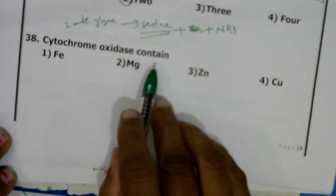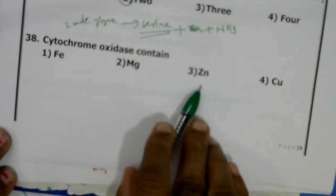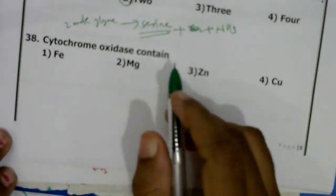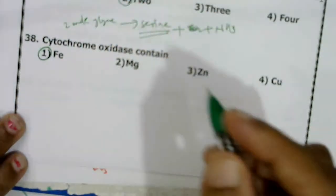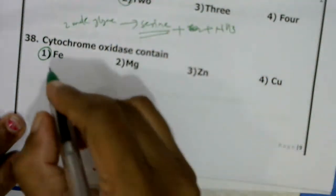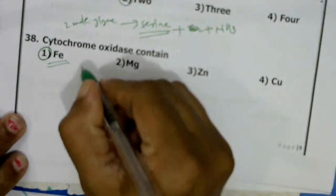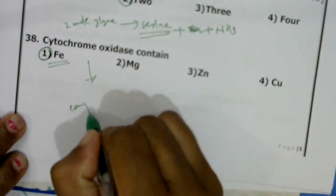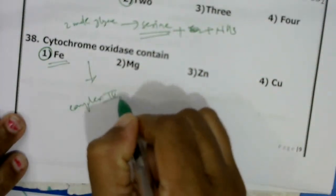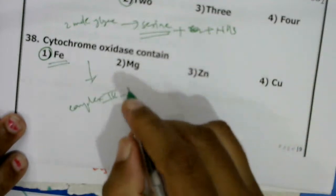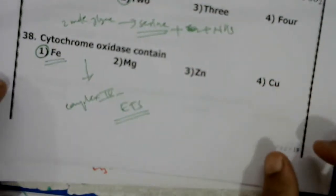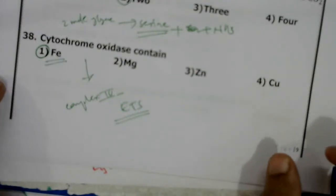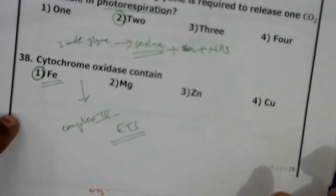Cytochrome oxidase contains Fe, Mg, Zn, or Cu? Cytochrome oxidase is an intermediate electron carrier — it is an iron-containing protein present in complex 4 of the mitochondrial electron transport system. Correct answer: first option, Fe (iron).